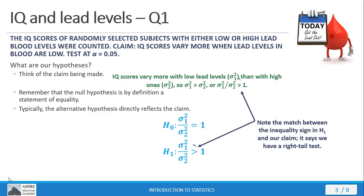So we have a match between our claim and our alternative hypothesis, and that inequality sign, like an arrow pointing to the right, says we have a one-tailed test on the right side of our distribution.